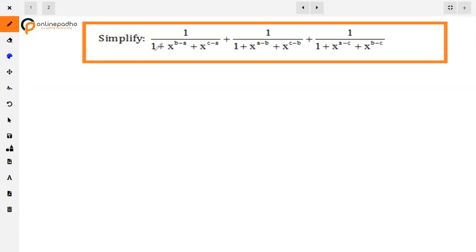The question is simplify 1 upon 1 plus x raised to power b minus a plus x raised to power c minus a plus 1 upon 1 plus x raised to power a minus b plus x raised to power c minus b plus 1 upon 1 plus x raised to power a minus c plus x raised to power b minus c. This we have to simplify.